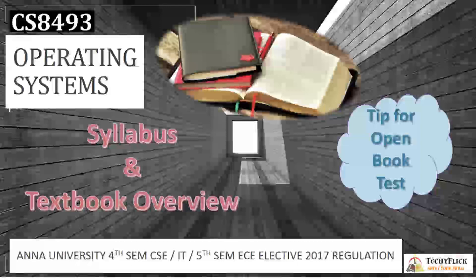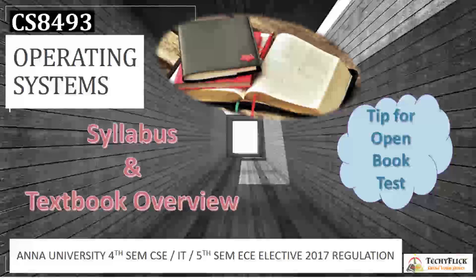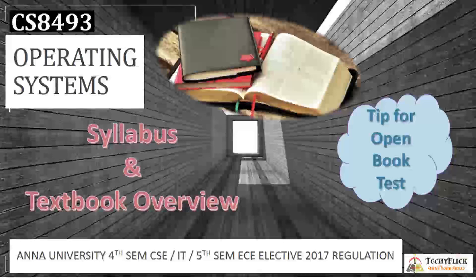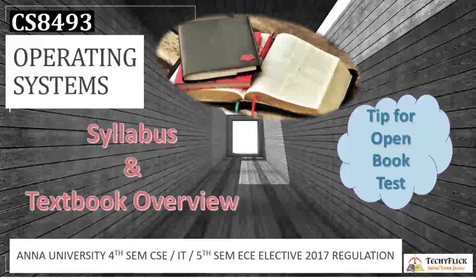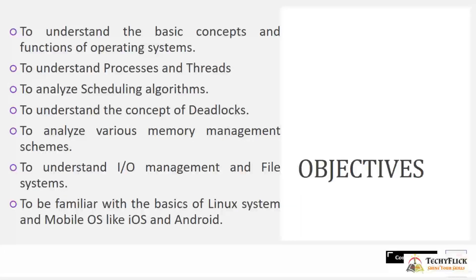CS 8493 Operating Systems is an Anna University 4th semester Computer Science Engineering and Information Technology paper. ECE students will also study this paper in their 5th semester elective. This is the 2017 regulation syllabus. Objectives include understanding basic OS concepts, processes and threads, scheduling algorithms, deadlock, memory management schemes, I/O management, file systems, and the basics of Linux, iOS, and Android.